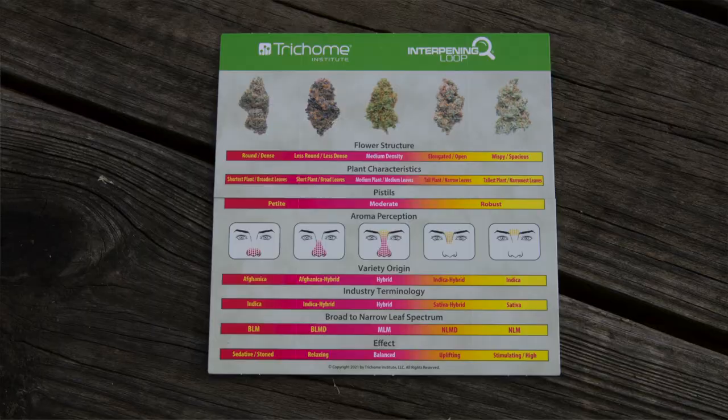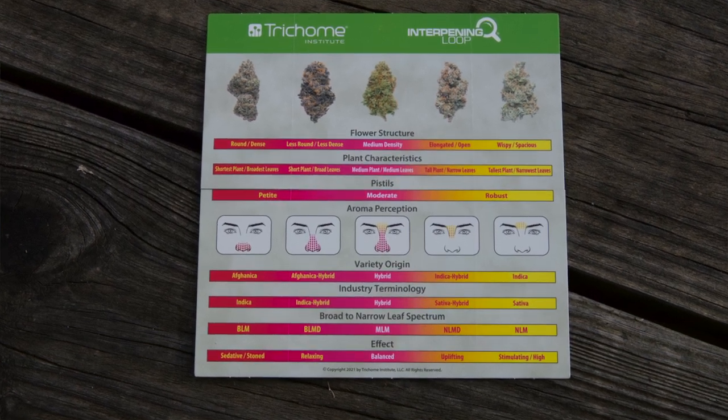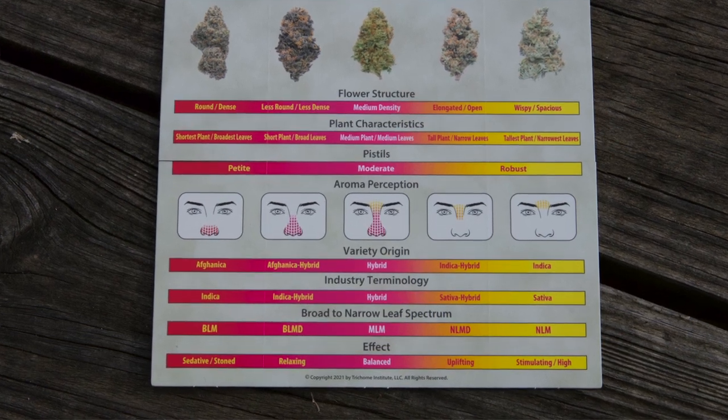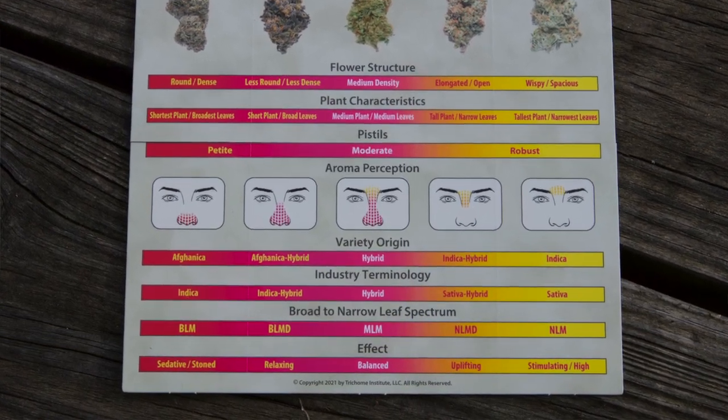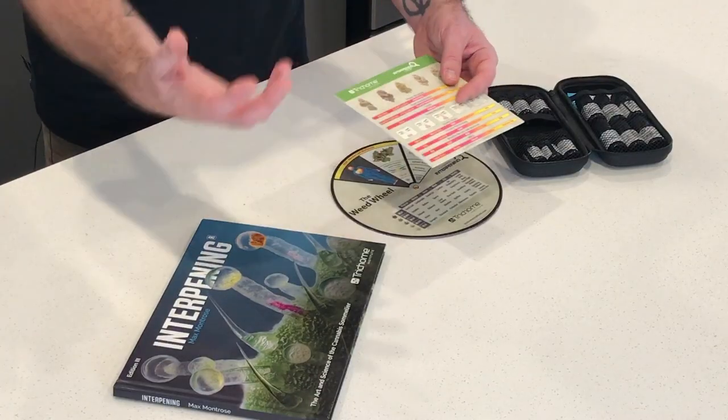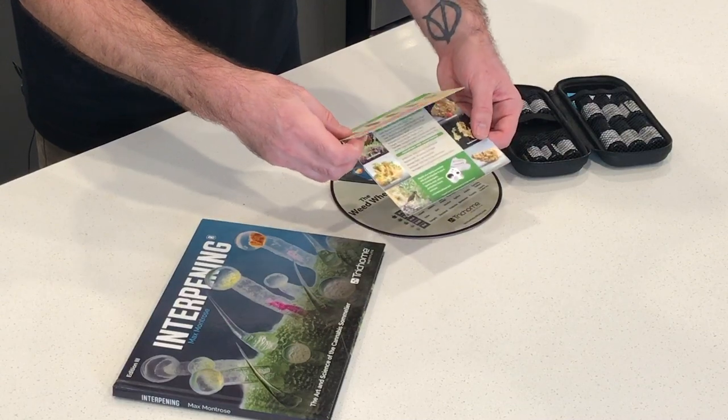We have the online course, the book that goes with it, and three different tools to help you throughout your Interpreting or cannabis sommelier journey. The first is the Interpreting Loop, which guides you through the various characteristics of the flower and helps pinpoint the variety of origin, industry terminology, and overall structure. There's another page you flip to — like weed origami — that helps you identify flaws.